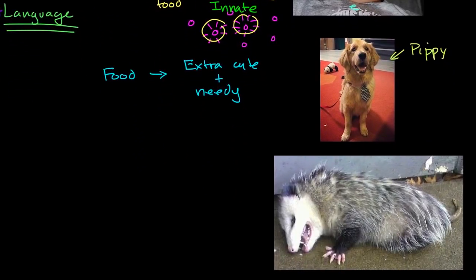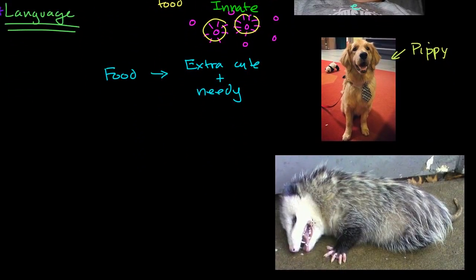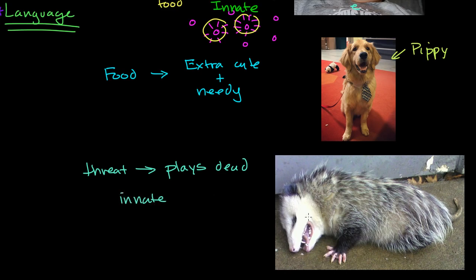This right over here is a possum playing dead — a fairly famous behavior. When there is a threat, maybe a predator around, the possum plays dead. I would guess this is innate — they didn't have to see another possum do this behavior. In fact, they might not even be able to help it: when their stress hormones go up high enough, they might just shift into this looking-dead state. When people say 'that's instinct,' they're often talking about an innate behavior like this.